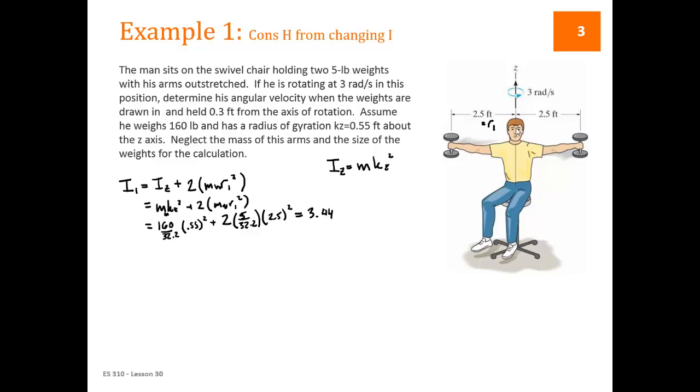So if we plug in numbers here we get Mkz squared, this is mass of the man, plus two times mass of the weight, R1 squared. Mass of the man is 160 divided by 32.2, Kz is 0.55 squared, plus two times 5 divided by 32.2, times R1 squared, 2.5 squared. This becomes 3.44.